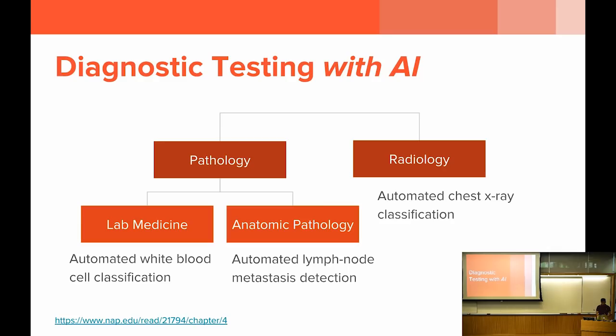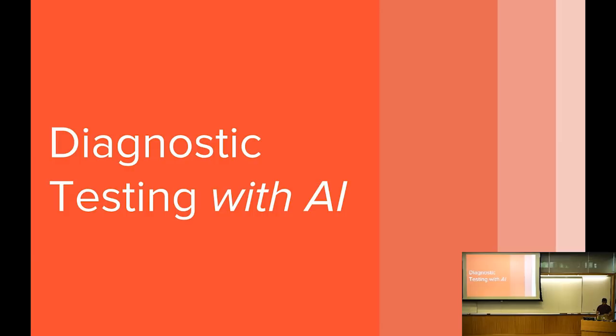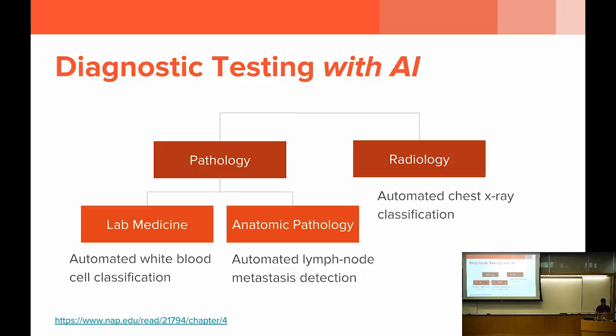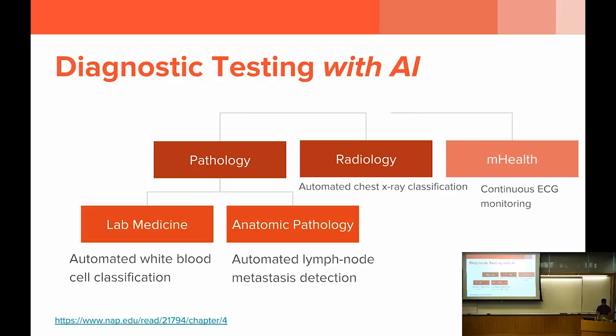What do we imagine this world will look like with AI? Some examples of things already going on: in lab medicine, deep learning is being used to classify white blood cells from microscope images. We can use AI to automatically detect if a cancer has metastasized to the lymph nodes. We can look at chest X-rays and automatically decide what pathologies they have. With AI, there's another part of the diagnostic testing world being more and more enabled — mobile health — which allows continuous health monitoring in a way previously inaccessible due to the volume and frequency of data generated.